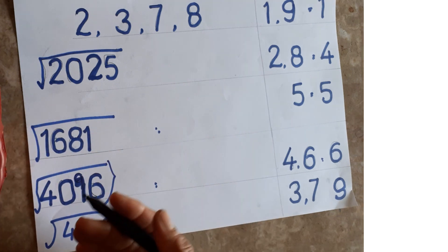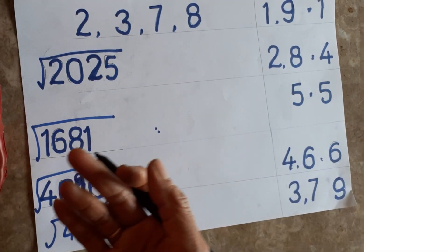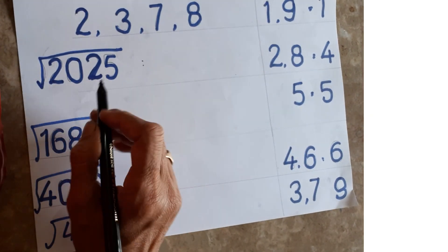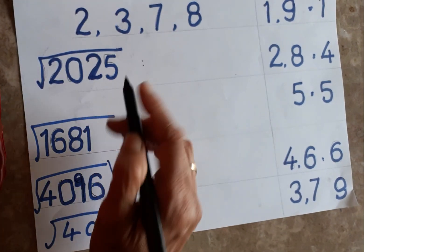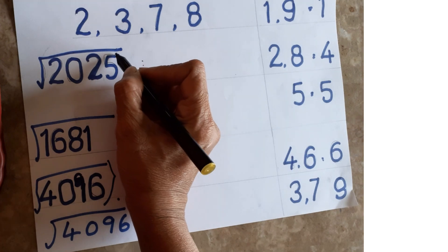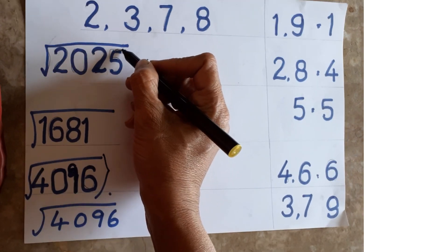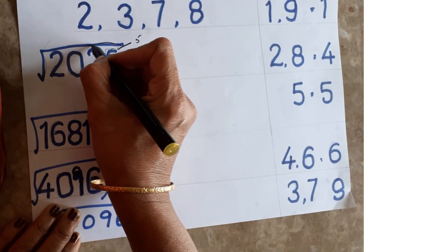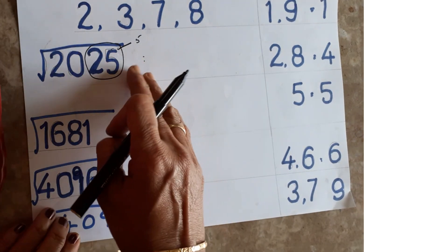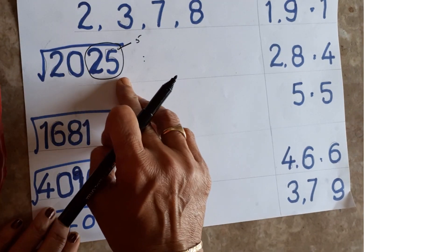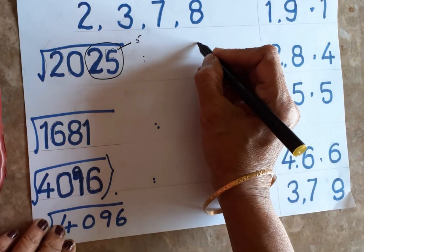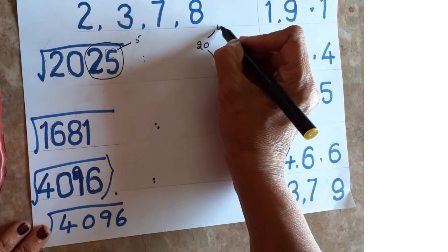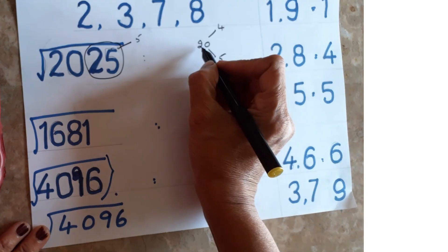Now I'll tell you the trick with examples — one, two, three examples and you will understand easily. Square root of 2025: what is in the units place? Five. Five means you will get 5 in the units place — leave that. Now eliminate the last two digits (units and tens place). What is remaining? Twenty. Twenty falls between which two square numbers? Four fours are 16 and five fives are 25 — it falls between these two.